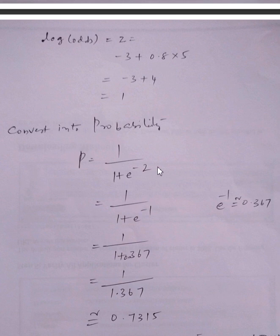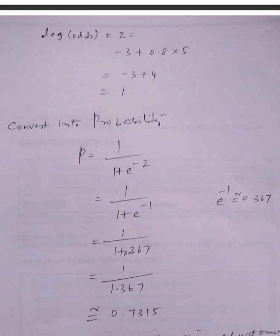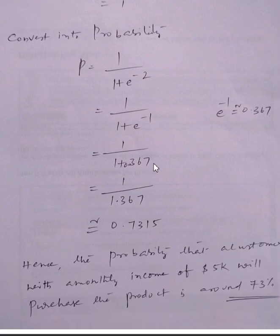Now convert it into probability: p = 1/(1 + e^-z) = 1/(1 + e^-1). Separately we calculate e^-1, which is approximately 0.367. So we substitute: 1/(1 + 0.367) = 1/1.367 ≈ 0.7315.